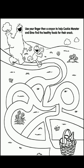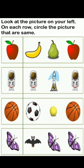Now let's come to the next question: look at the picture on your left in each row and circle the picture that is the same. As you can see, on the left side some objects are given, and what you have to do is find the same object on the right side.